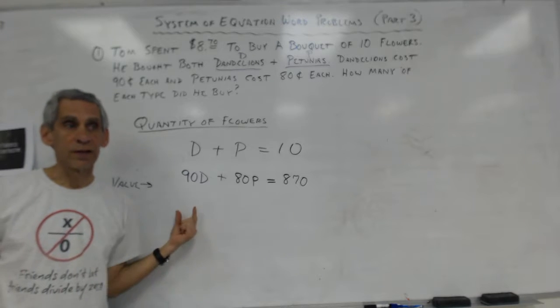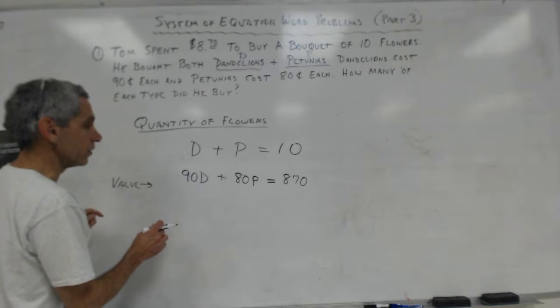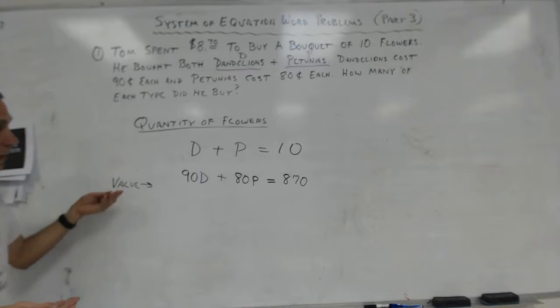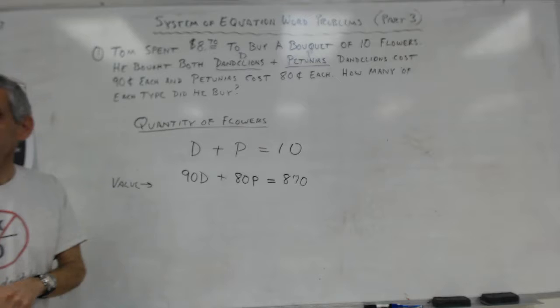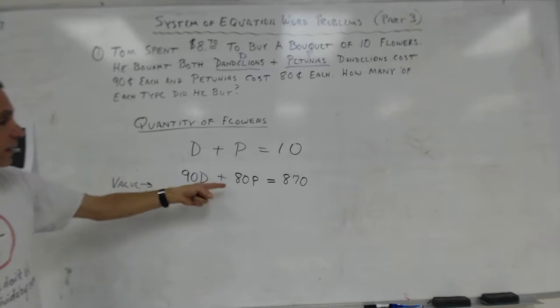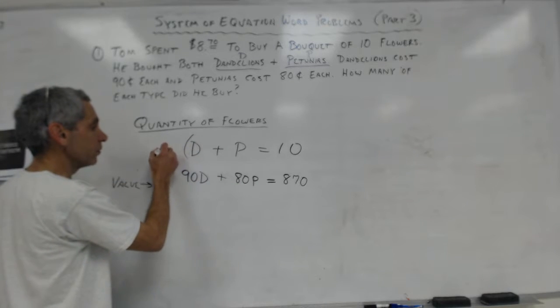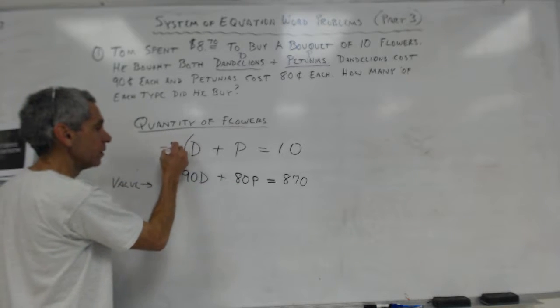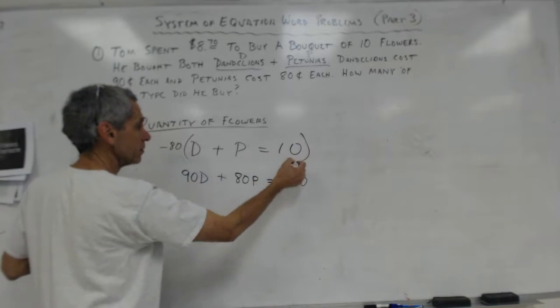So I've got to write this as cents. Everything has to be in cents or everything has to be in dollars with decimals, either way. I just think it's easier without the decimals. So now we've got two equations, a quantity equation and a value equation. I'm going to use systems of equations by elimination. I immediately see I've got ninety D and eighty P. I'm going to multiply this whole top one by negative eighty, that way negative eighty and positive eighty will cross out.